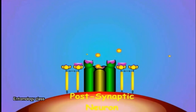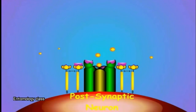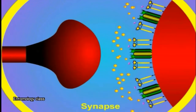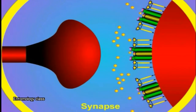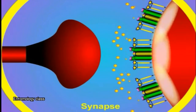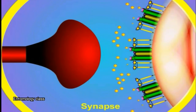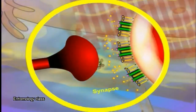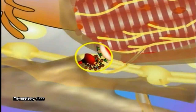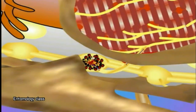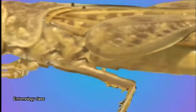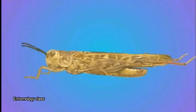Acetylcholinesterase cannot dissolve the neonicotinoids like they do with acetylcholine. So in the post-synaptic junction, over-stimulation happens as the channels are permanently open, and it cannot be closed by degradation just like they degrade acetylcholine with acetylcholinesterase. Ultimately, the insect dies.